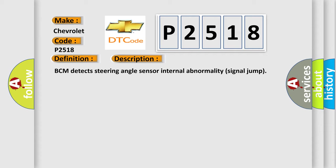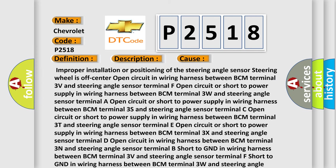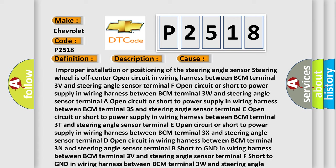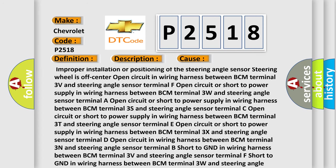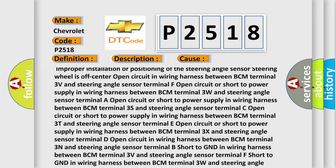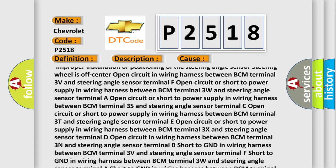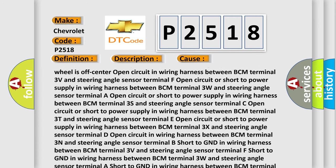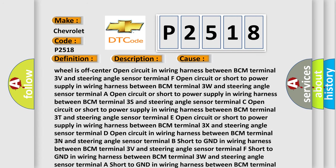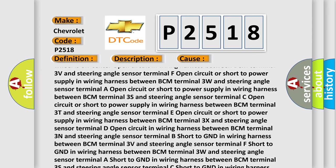This diagnostic error occurs most often in these cases. Improper installation or positioning of the steering angle sensor steering wheel is off-center, open circuit in wiring harness between BCM terminal 3V and steering angle sensor terminal F. Open circuit or short to power supply in wiring harness between BCM terminal 3V and steering angle sensor terminals E or D.